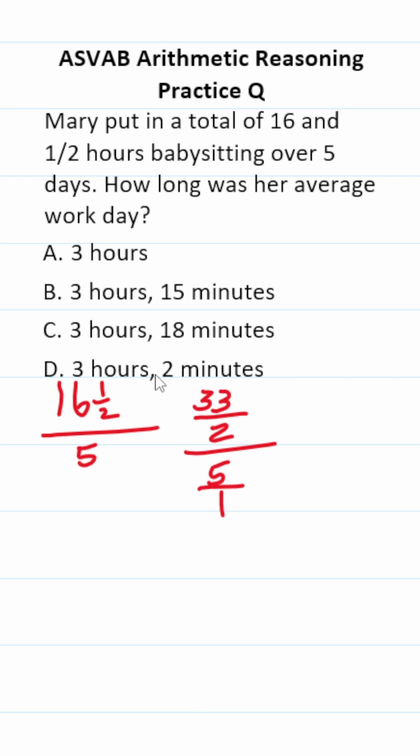Make five a fraction by placing it over one. Follow the algorithm: keep, change, flip. Keep 33 over two the same. Change from division to multiplication. Flip five over one to be one over five.